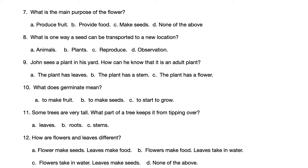Number 11. Some trees are very tall. What part of a tree keeps it from tipping over? A. Leaves. B. Roots. C. Stems.